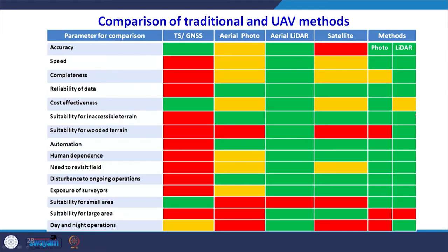A comparison of traditional methods and UAV-based methods covers parameters like accuracy, speed, completeness, reliability, cost effectiveness, suitability for inaccessible terrain, automation, human dependence, need to revisit the field, and day-and-night operation. Photogrammetric and lidar-based methods qualify in many of these: their accuracy and speed are quite satisfactory compared to satellite imagery or aerial photographs. There are certain areas where satellite imagery cannot provide the accuracy achievable from photogrammetric UAVs and lidar.